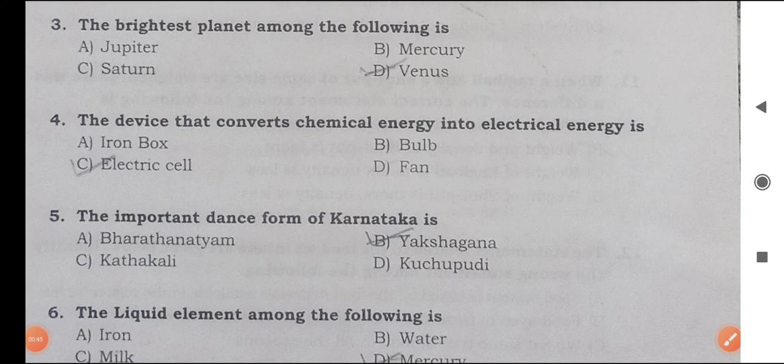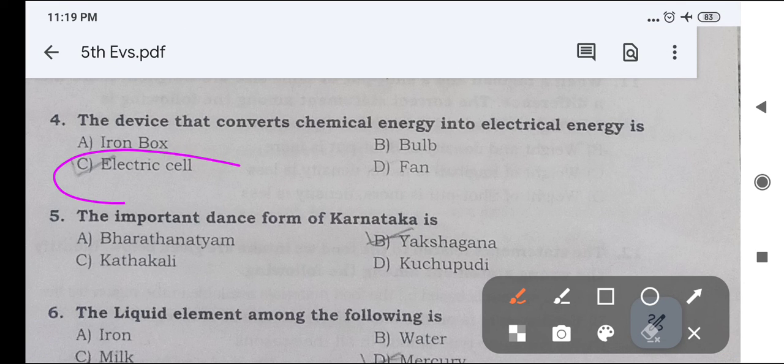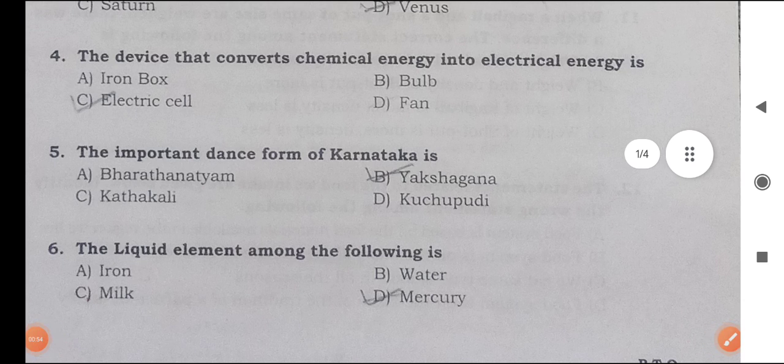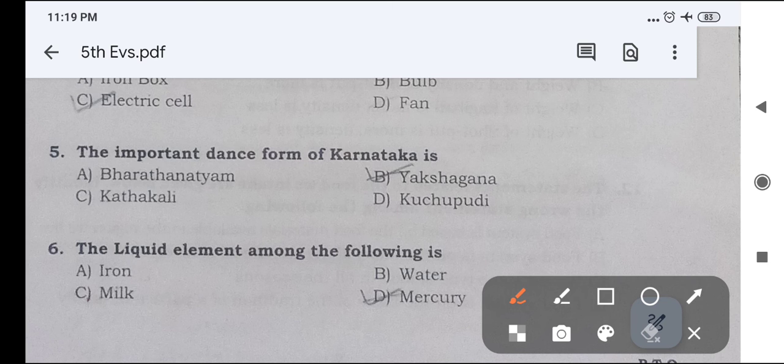Next, the device that converts chemical energy into electrical energy is option number C, electrical cell. Next, the important dance form of Karnataka is B option, Yakshagana is the right answer.